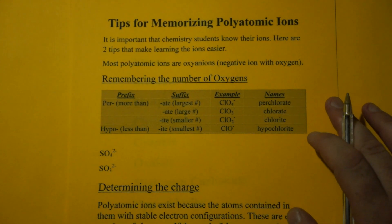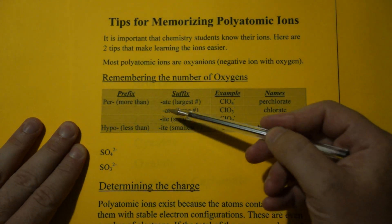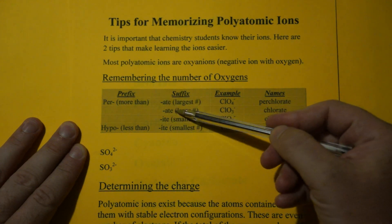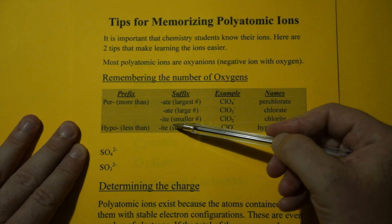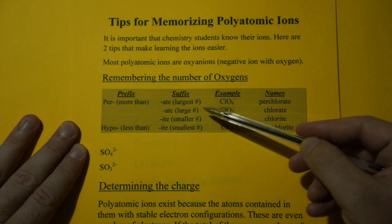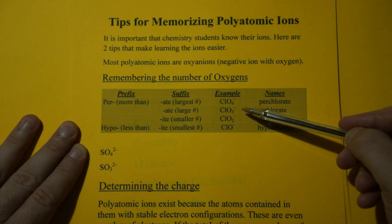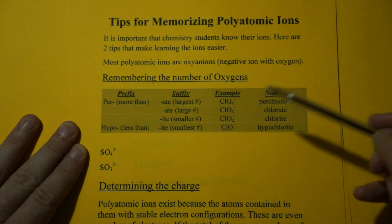So when it comes to polyatomic ions, you're going to notice that there are a few endings you have to look out for: -ate and -ite. -ate is probably the most common ion you're going to come across. -ite is less common, but what happens is when you have these oxy ions or oxy anions, that's just negative ions with oxygen, the -ate always has one more oxygen than the -ite.